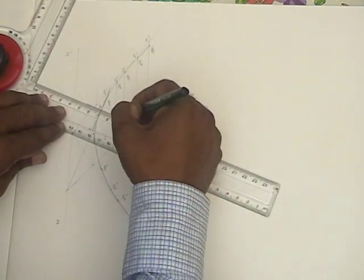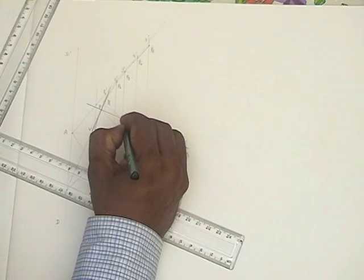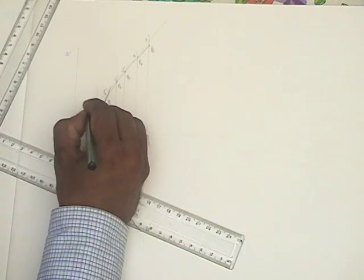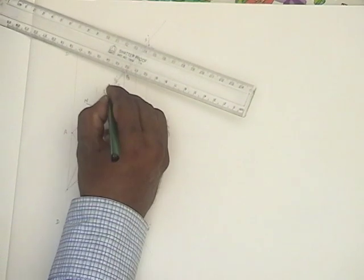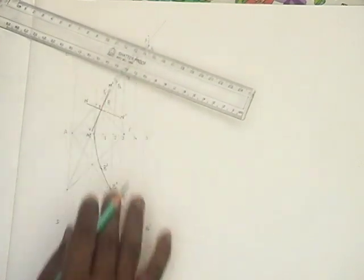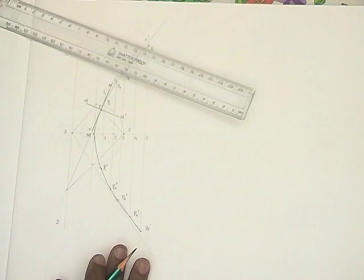So mark the normal as M, M dash. Tangent as M, M dash.